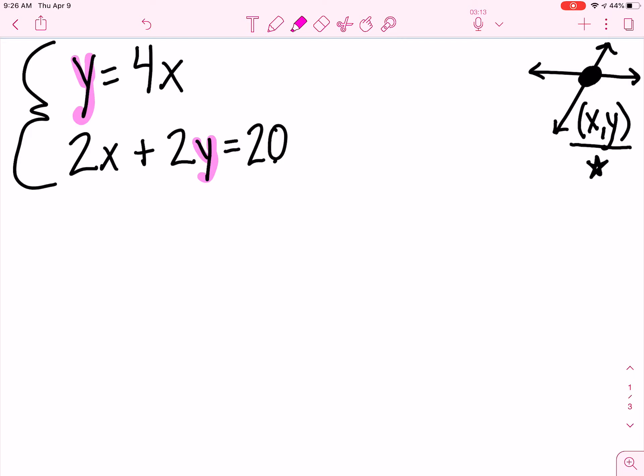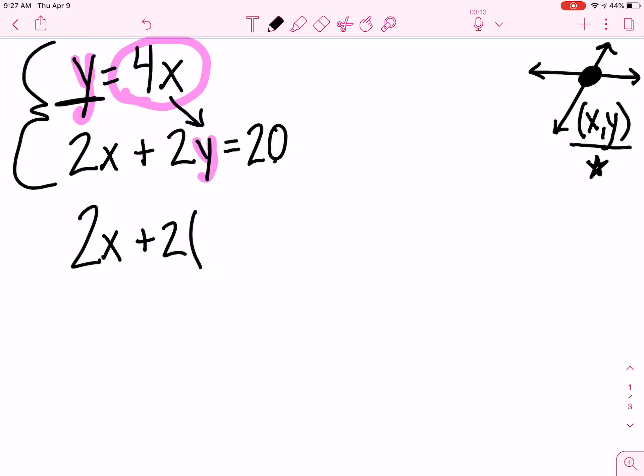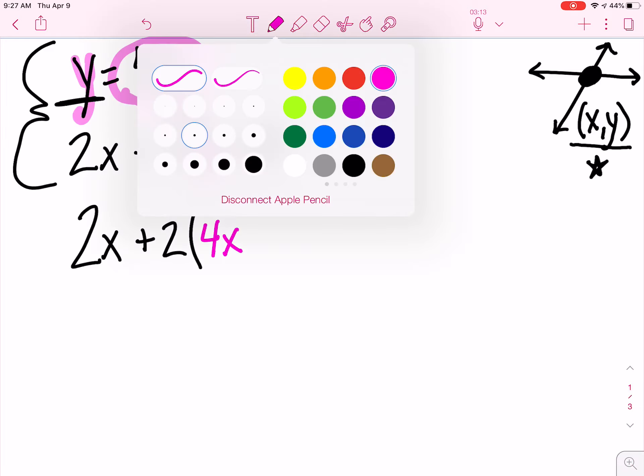That's the variable that I'm going to substitute, because y is actually the same thing as 4x. So when I go to rewrite my equation here, 2x plus 2, I'm going to make a substitution. And instead of y, I'm going to substitute in 4x. And then I'm going to copy down equals 20.